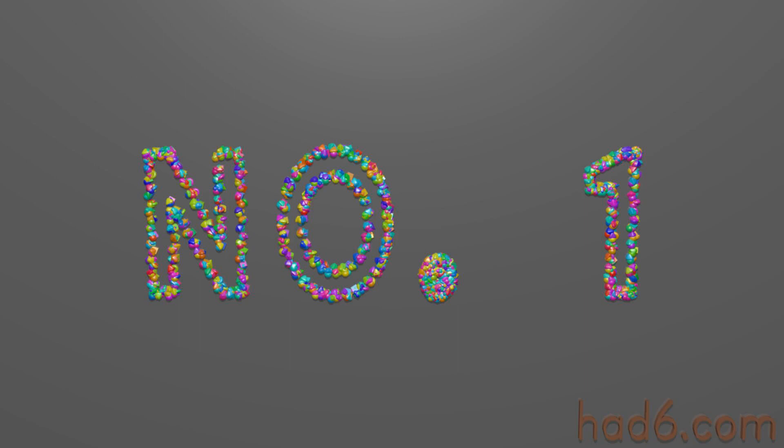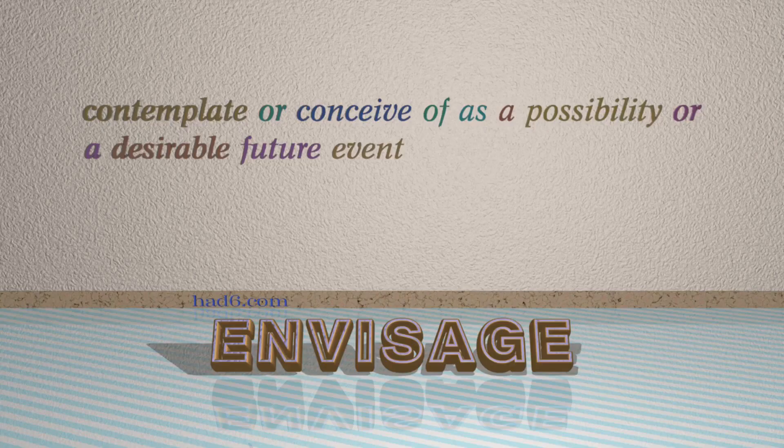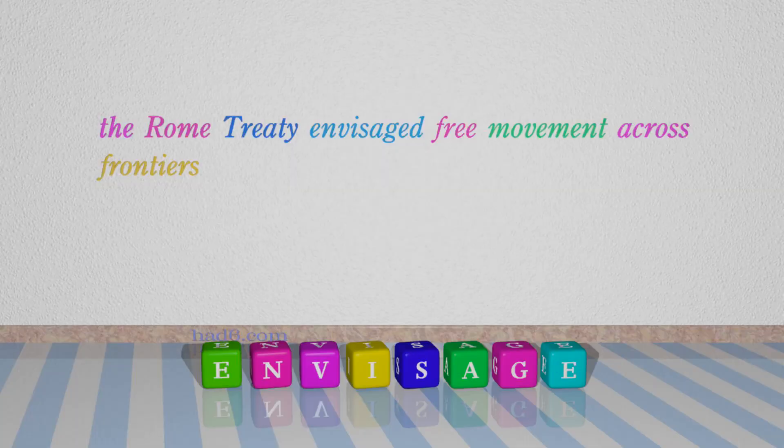Number 1: Envisage. Which means: contemplate or conceive of as a possibility or a desirable future event. For example: The Rome Treaty envisaged free movement across frontiers.